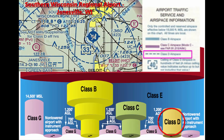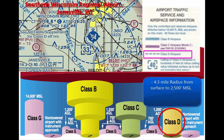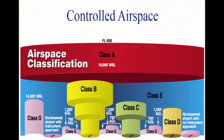Class D airspace usually extends from the surface to 2,000 feet above the airport. All aircraft within the airspace must maintain two-way radio communication with air traffic control. Class D airspace is tailored if instrument procedures are published.